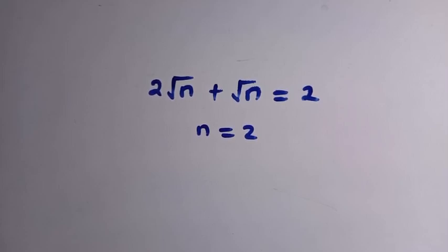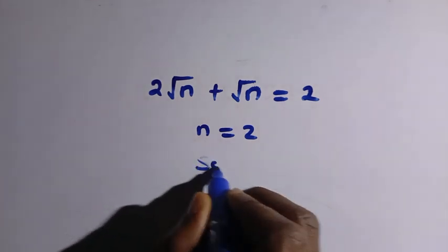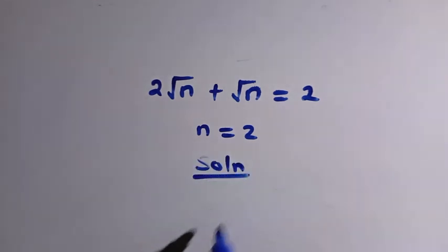Good day viewers, welcome. We want to solve this radical equation and find the value of n that satisfies it. One thing we have to note is that with roots we are going to get two values — one will satisfy and one may not — so let's see how we can get the two roots and consider the one that satisfies.